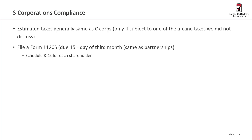S-Corporations file a form called an 1120-S, due the 15th day of the third month. So same as partnerships — for a calendar year, that would be March 15. They also complete a Schedule K-1 for each shareholder.